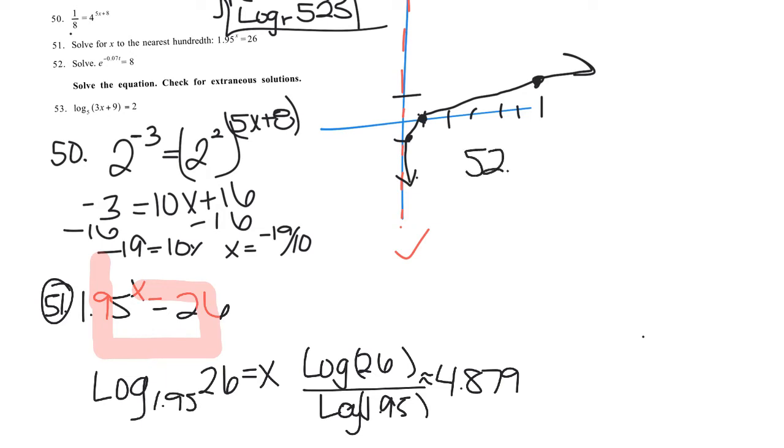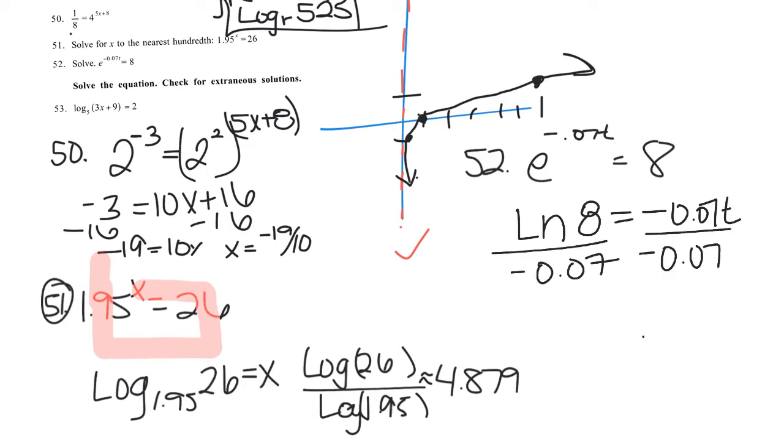Number 52, e to the negative 0.07t equals 8. Again, we can rewrite this: log base e, which is ln of 8, equals the exponent. So the natural log of 8 equals negative 0.07t, and I can divide it by negative 0.07. And then I can plug it into my calculator. The natural log of 8 is 2.079 divided by negative 0.07. Again, rounding on the paper but not in calculator, I get negative 29.706.